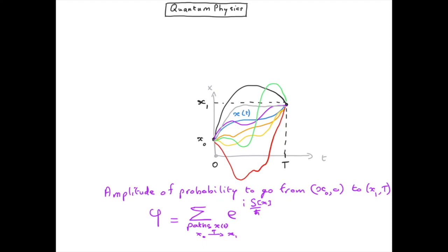We see that the amplitude of probability to go from one event to another is a sum of phasors. In fact, it's proportional to the sum of phasors, so we could have a constant in front of the sum over the path.